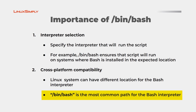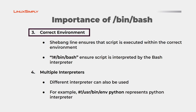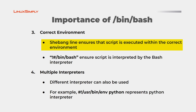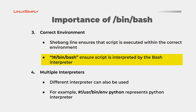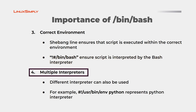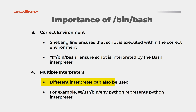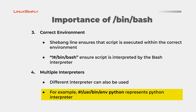The third point is correct environment — the shebang line ensures that the script is executed within the correct environment. That is, /bin/bash ensures that the script is interpreted by the bash interpreter, which uses bash-specific code. Lastly, multiple interpreters — you can also use different interpreters other than bash. For example, you can use the Python interpreter by mentioning the Python environment in the shebang line.